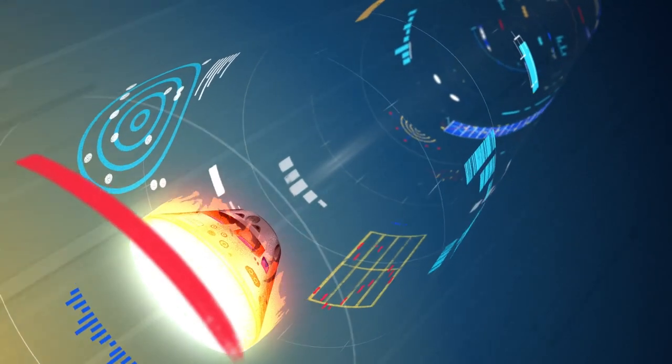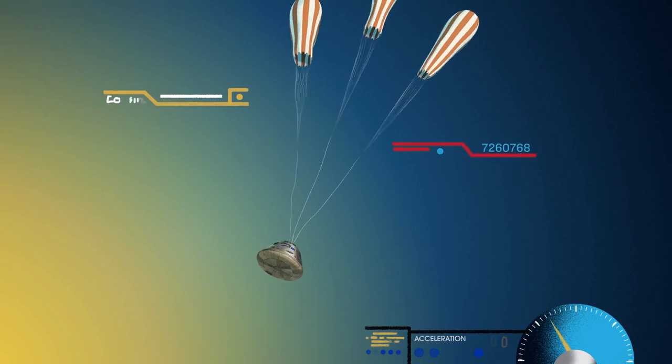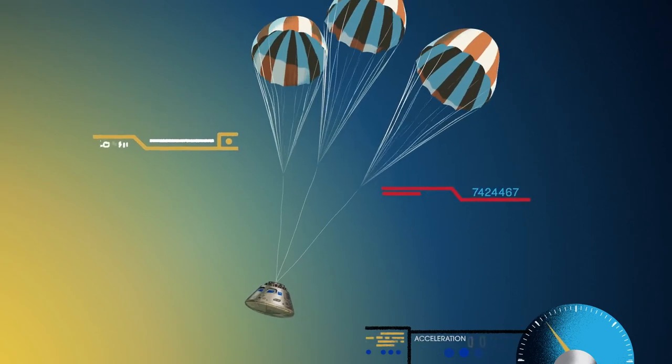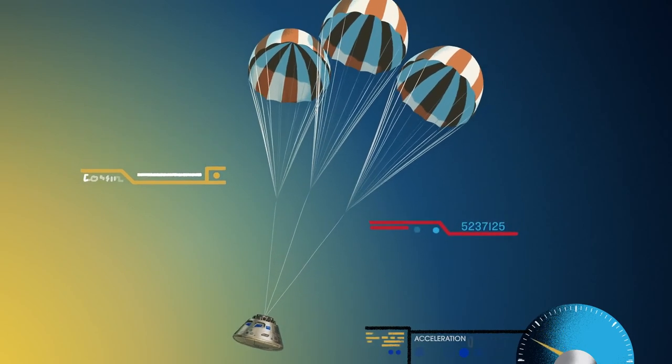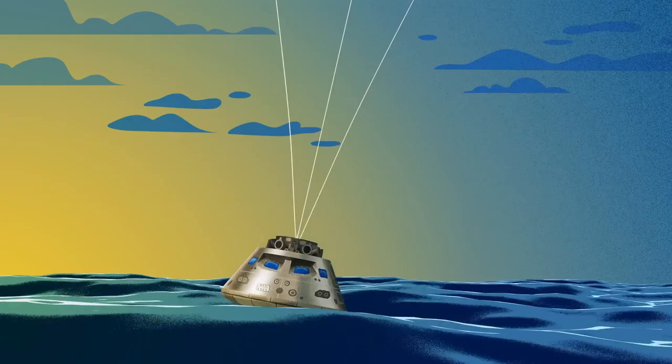With the Orion now at just 300 miles per hour, a series of parachutes uniquely tested and produced for this moment deploy, decelerating the craft to just 20 miles per hour for splashdown.